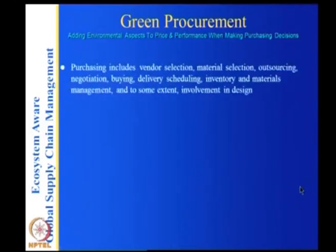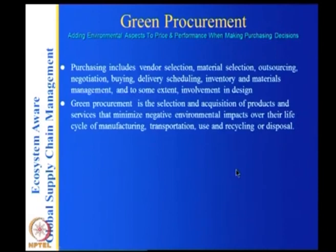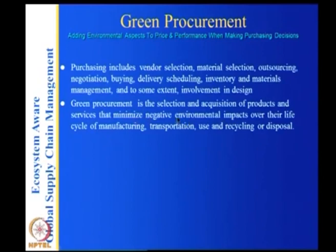Green procurement includes vendor selection, material selection, outsourcing, negotiation, buying, and delivery scheduling. It is the selection and acquisition of products and services that minimize negative environmental impact over the life cycle of manufacturing, transportation, use, recycling and disposal. Over this entire product life cycle you have to minimize the negative environmental impact.